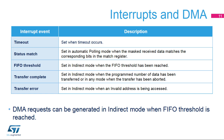The Quad SPI memory interface has five interrupt sources: timeout, status match when the masked received data matches the corresponding bits in the match register in automatic polling mode, FIFO threshold, transfer complete, and transfer error. DMA requests can be generated in indirect mode when the FIFO threshold is reached.